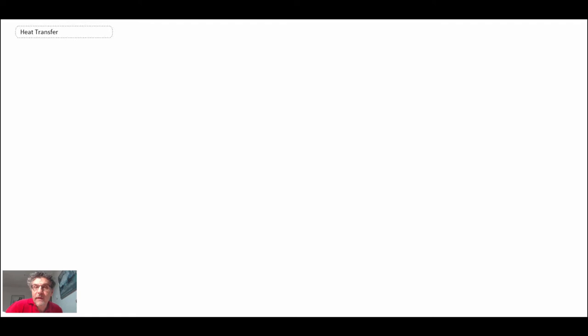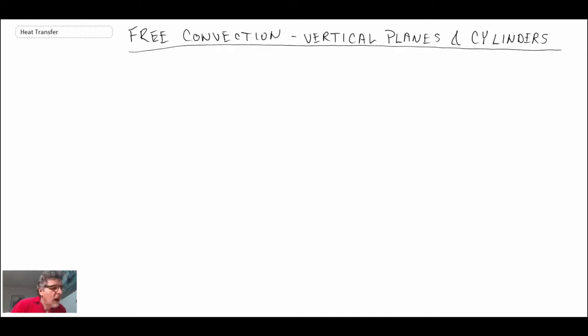In this lecture, we'll be taking a look at some of the correlations that exist for various shapes dealing with natural or free convection. We'll begin by looking at the case of an isothermal surface.